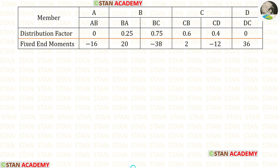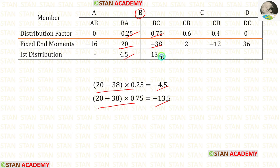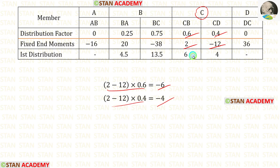Now let us start making the moment distribution table. We enter the members, distribution factors, and fixed end moments. For the first distribution at joint B, we add the two fixed end moments and multiply by the distribution factors — giving negative values, which are entered as positive. Similarly for the first distribution at joint C, we add the fixed end moments and multiply by distribution factors — giving negative values entered as positive.